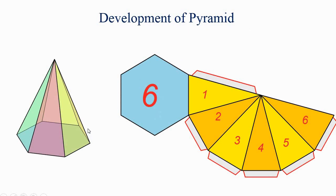Here I am considering a hexagonal pyramid. The base will be a hexagon and there is an apex and six triangular faces. When you develop it, you will get a figure like this — this is the complete development of a hexagonal pyramid: six triangular faces (one, two, three, four, five, six) and a base which is a hexagon.